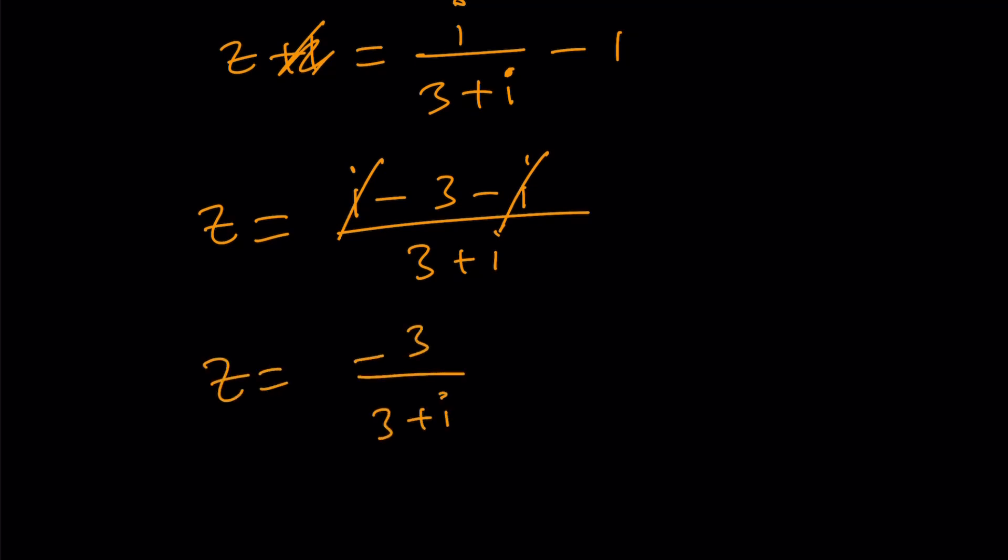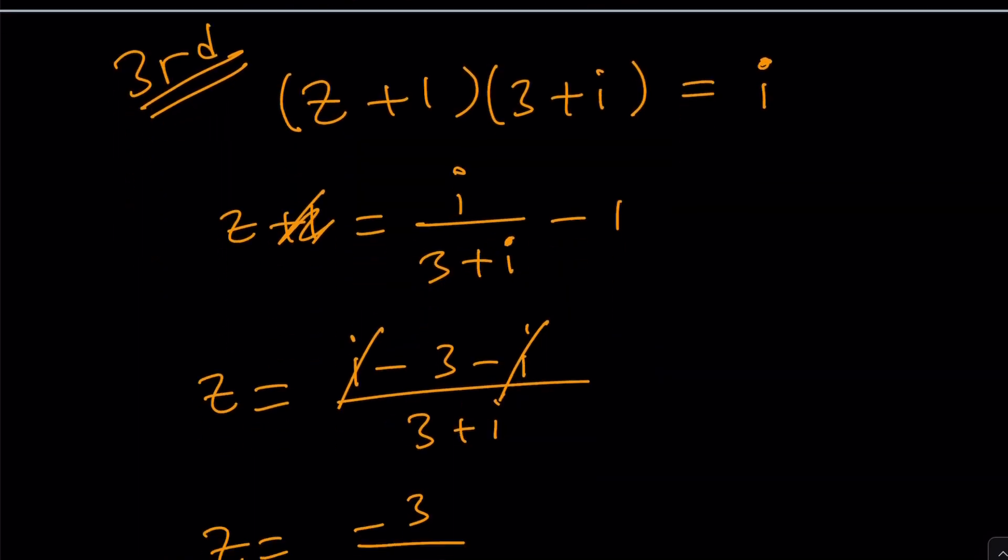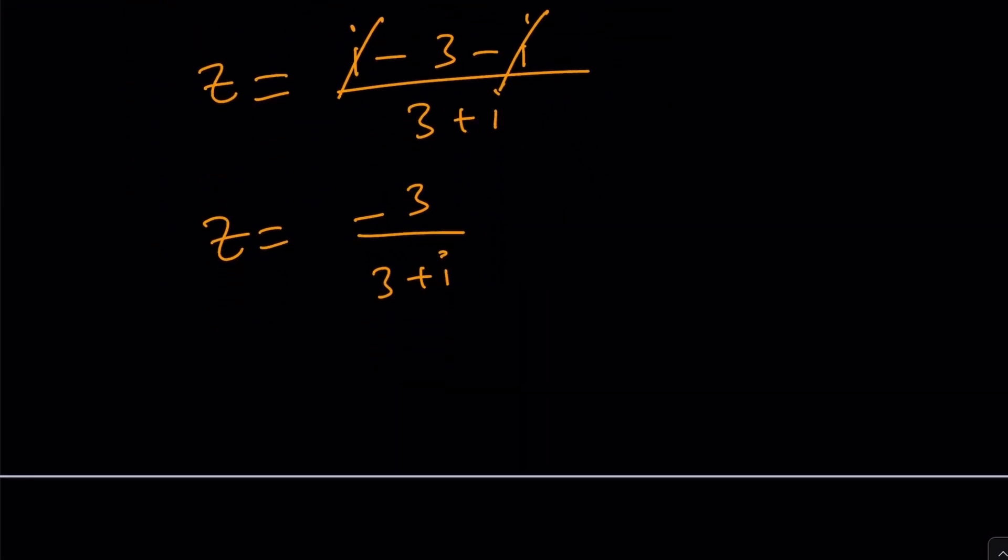And again, we do need to, notice that we're getting the same thing. We do need to multiply by the conjugate. But we've got to multiply both the top and bottom. And then from here we get the same thing. We should write negative 9 plus 3i divided by 9 plus 1, again, 10. And Z now can be written as negative 9 over 10 plus 3 over 10i.